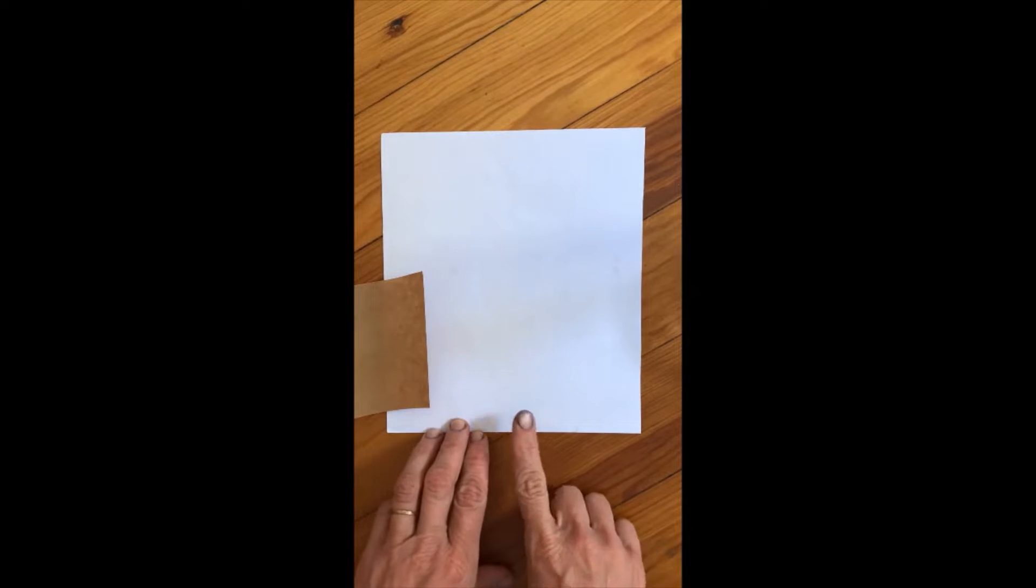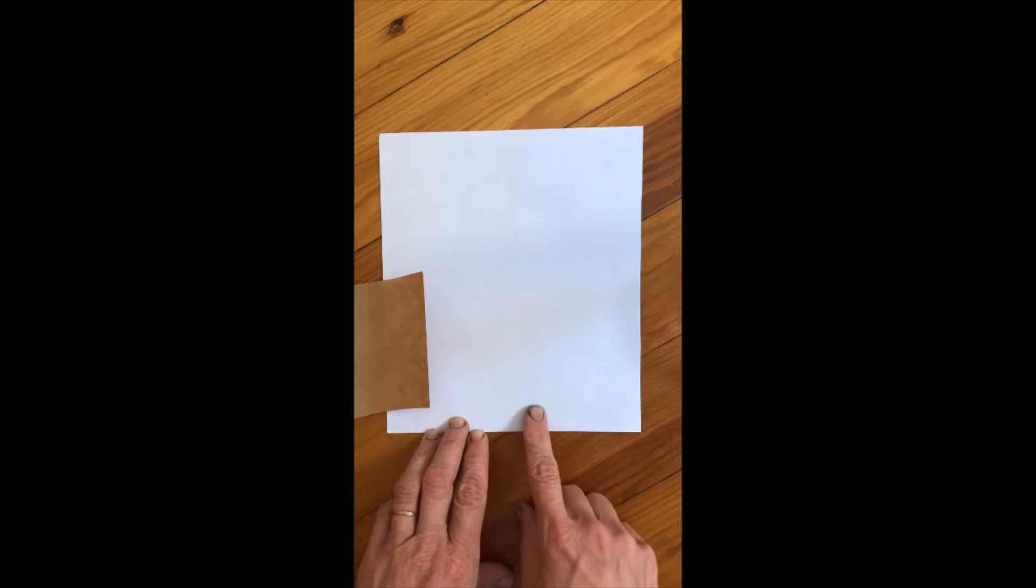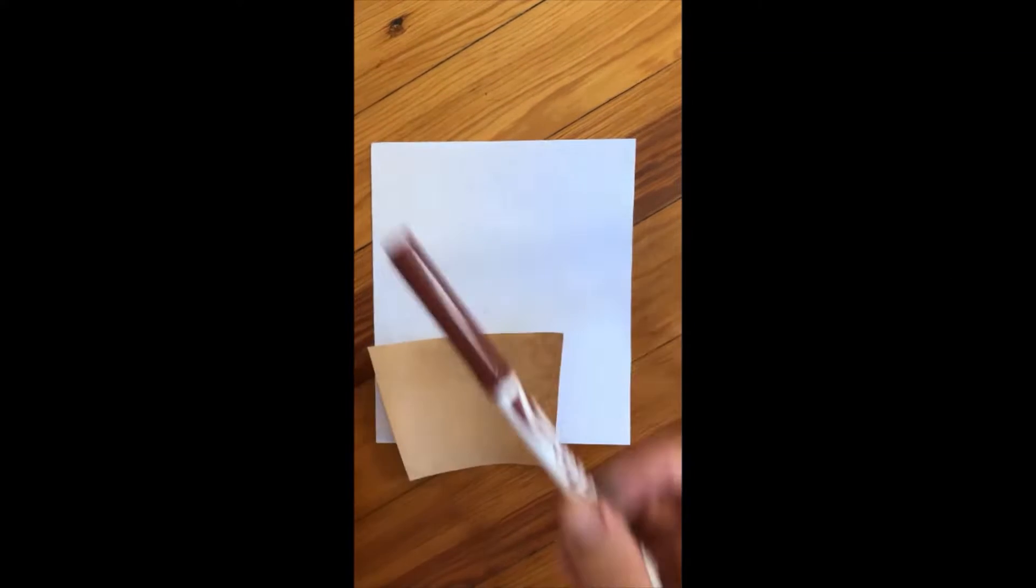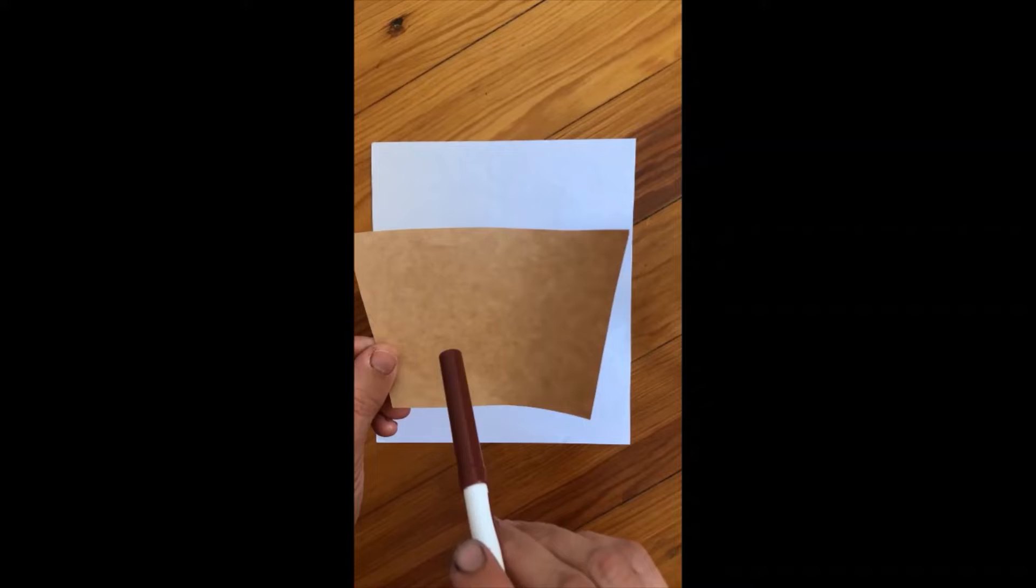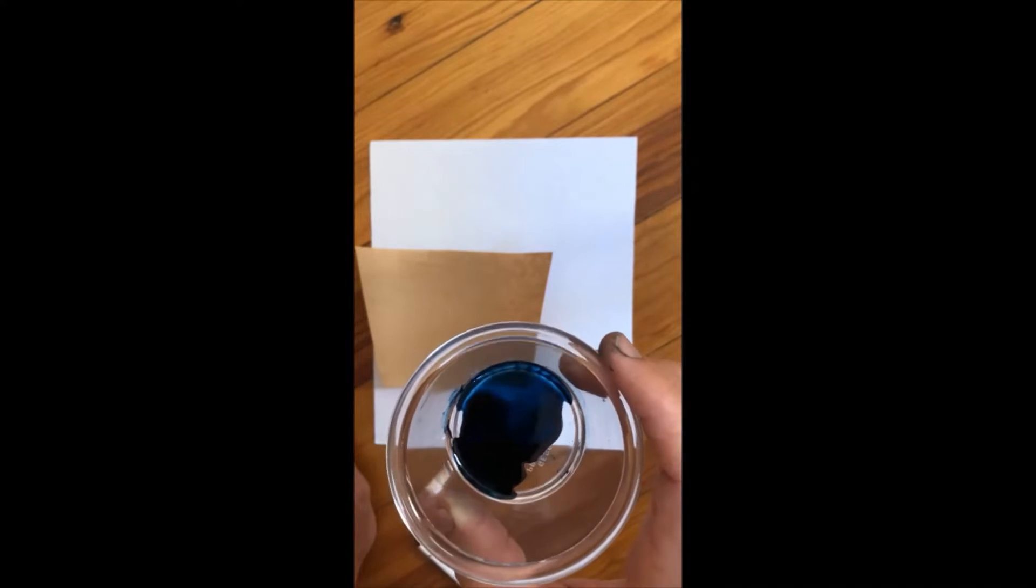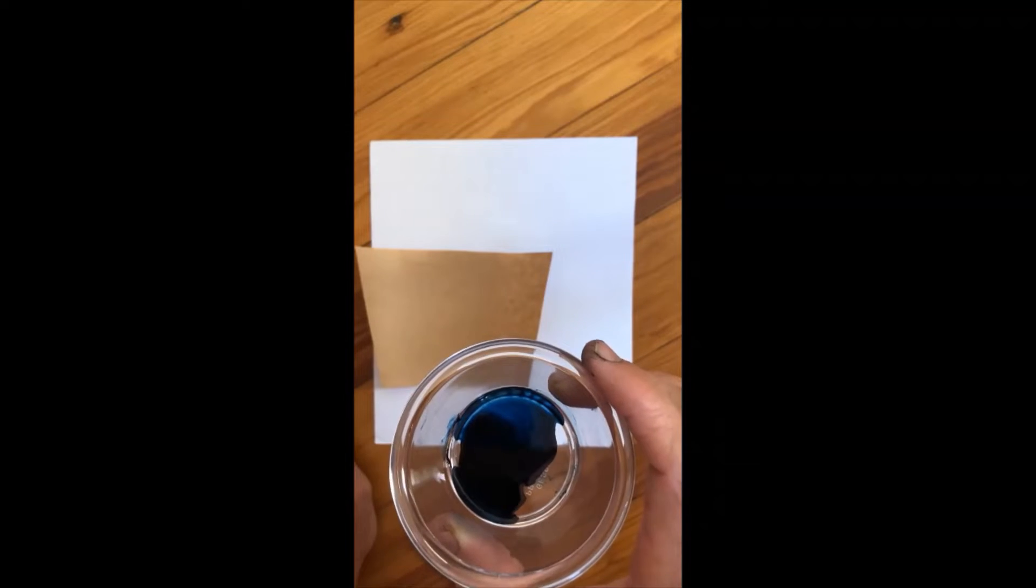So the first thing, what you need. Lo que necesitas para hacer la manualidad. Una hoja de papel blanco. Una hoja de papel blanco con marrón. Un marcador de marrón, o una hoja de papel del marrón, del color marrón. Un poco de pintura del color azul. A little bit of water-based paint. You want to use paint that's easy to clean up, so you could use finger paint or something like that. And you'll need some scissors and some tape or glue, pegamento.